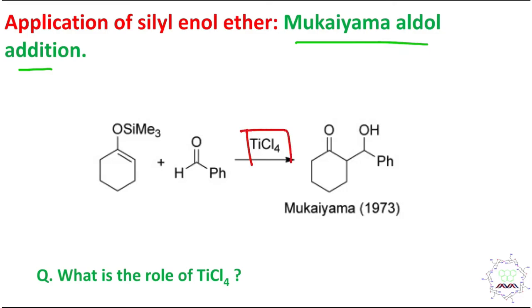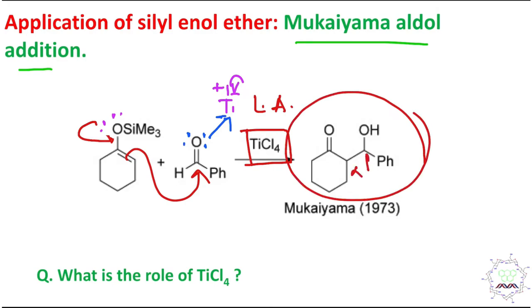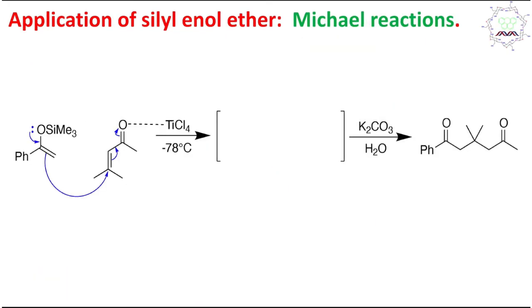Another type of C–C bond formation is Mukaiyama aldol addition. TiCl₄ is also used here as a strong Lewis acid: it coordinates with the lone pair of the aldehyde, increasing electron deficiency at the carbonyl carbon, making it a better electrophile. Although the silyl enol ether is a weaker nucleophile, it can still attack. After reaction and hydrolysis, a beta-hydroxy carbonyl derivative is produced, which contains an asymmetric center — in a chiral environment, enantioselective products can be obtained.